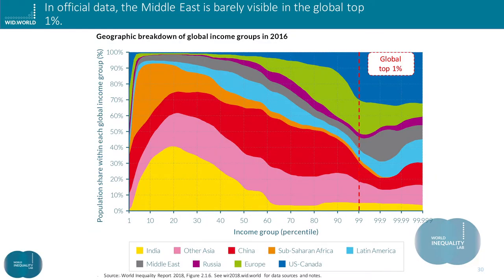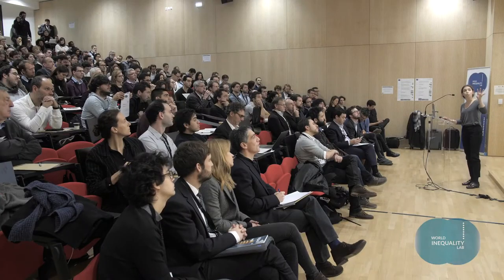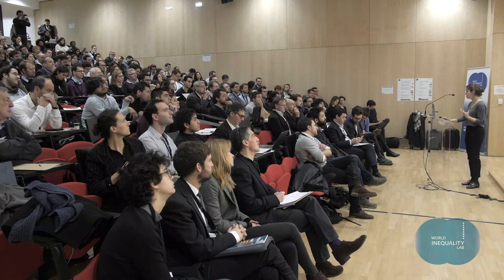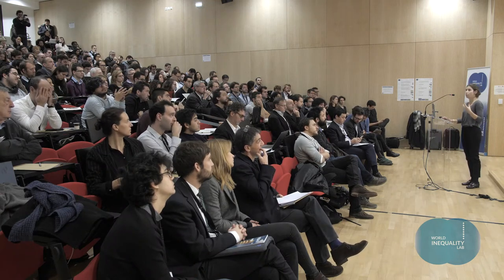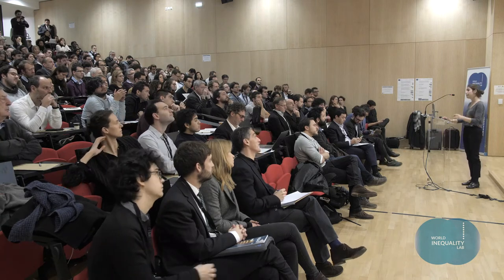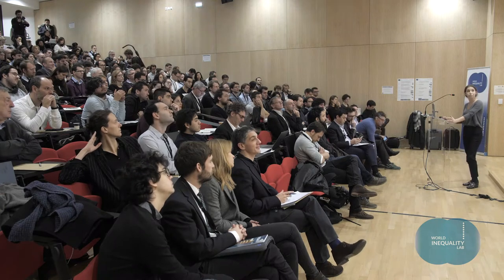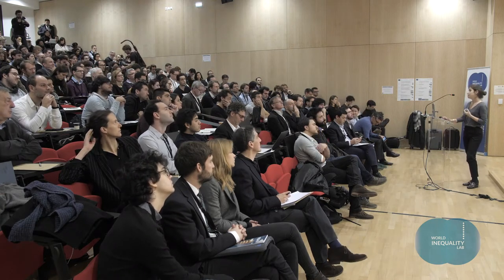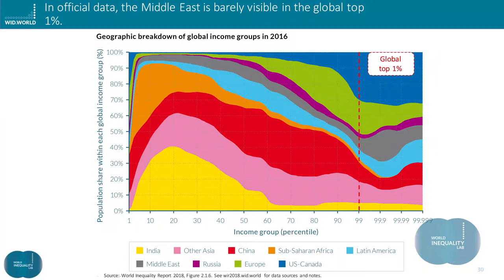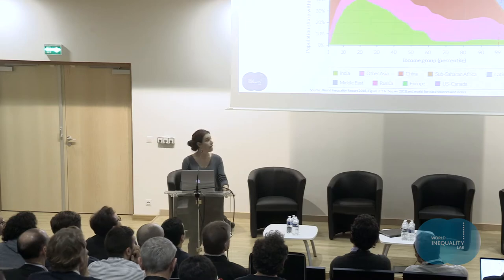Let me come back to the graph Lucas just showed. If we take at face value official inequality statistics, the gray area on the right-hand side would be barely visible, which means that there would be no emirs or oil magnates within the top 1% of the global income distribution — something which is a little bit hard to believe. Concretely, in the data, it meant that we did not observe individuals with more than three times the average income. It is really thanks to the increased availability of fiscal data that followed the discussion on Thomas' book Capital in the 21st Century that we were able to make this gray area appear and change the dominant narrative on inequality in the region.